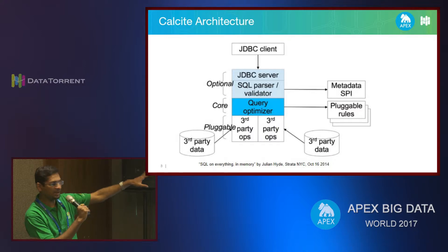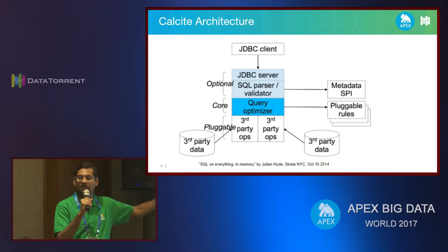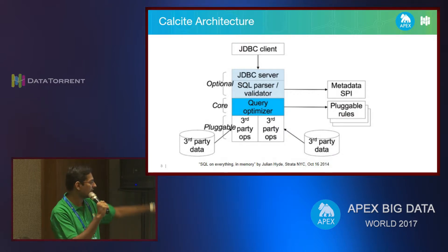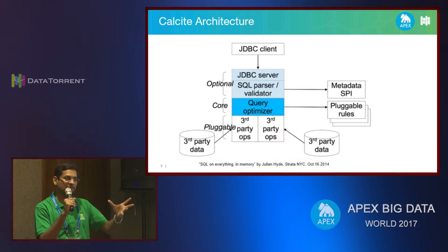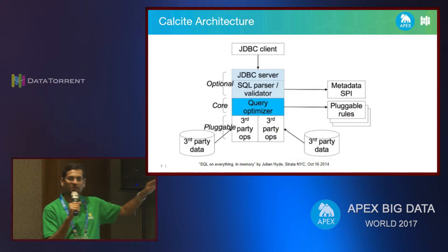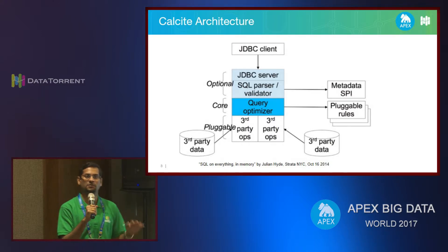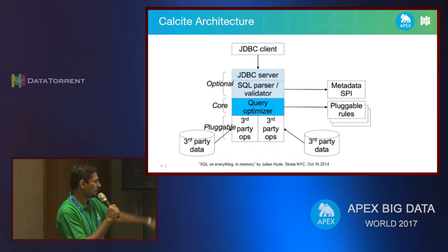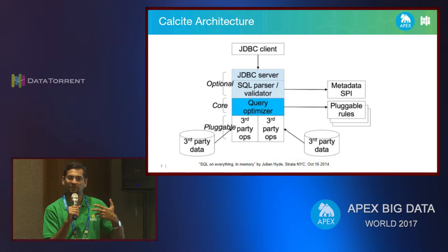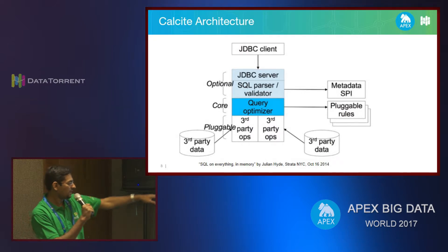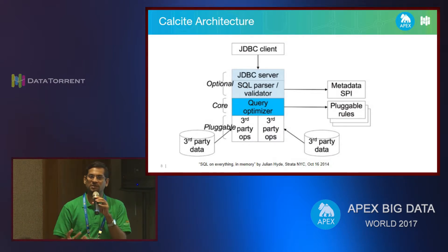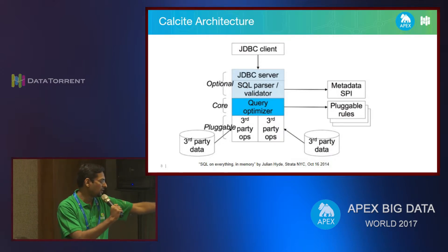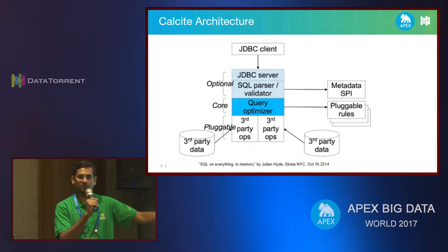Various JDBC servers — whether MySQL, Oracle DB, or anything else — have these generic layers existing. At the top is a JDBC server layer, which is a communication layer that communicates with the client. Then you have a parser and validator which parses the queries and does validations. At this point, the query is converted into something called a relational expression. Relational algebra is a popular representation that every RDBMS uses to represent a SQL statement into something executable. After SQL validation and parsing, the query optimizer then optimizes the relational algebra into a more efficient form so that execution is much more efficient.